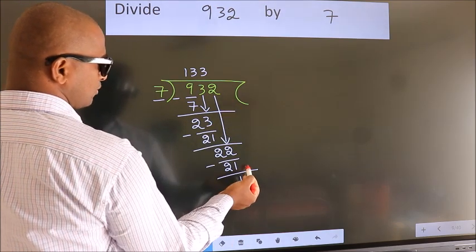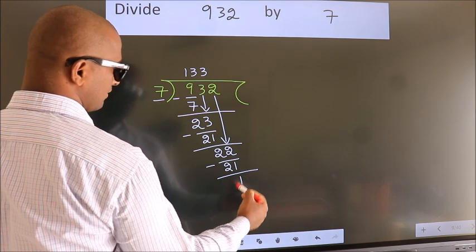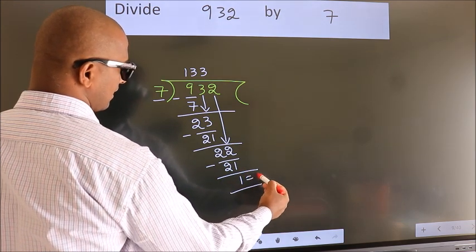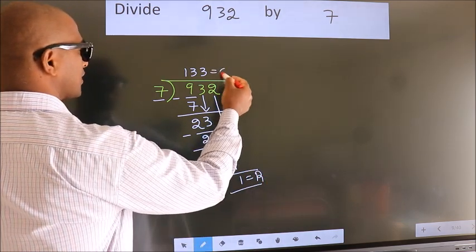No more numbers to bring down. So we stop here. This is our remainder. This is our quotient.